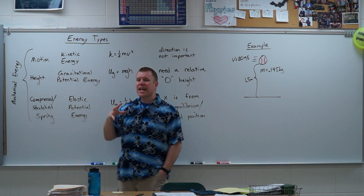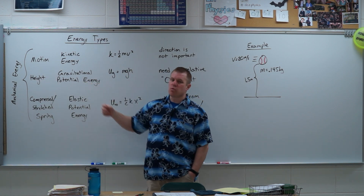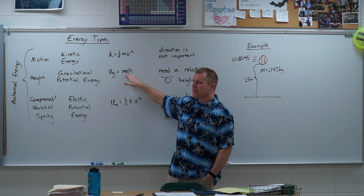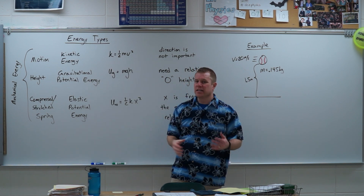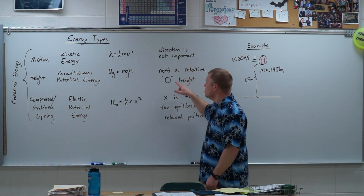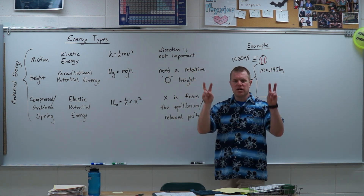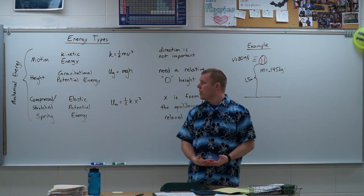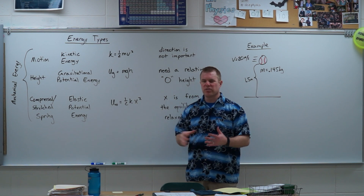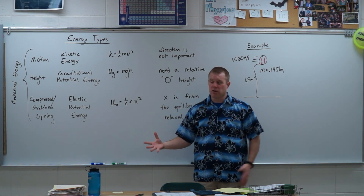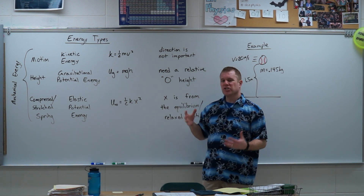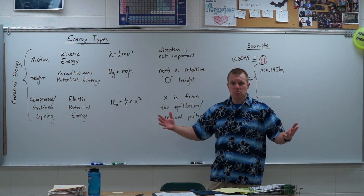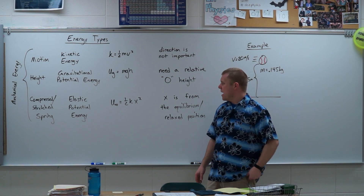If there is a height, we have something called gravitational potential energy, where gravitational potential energy is equal to mass times the acceleration of gravity times your height. Now what is your height relative to? We need a relative zero height, so we typically choose the ground as our zero height. When we move away from being on Earth and talk more globally about gravitational energy, we choose our reference height at infinity, which works out best for the math.